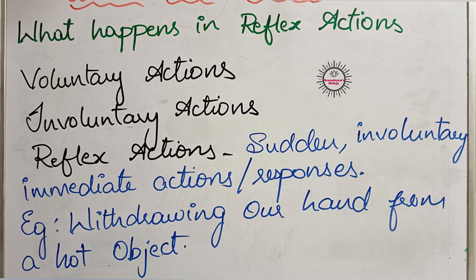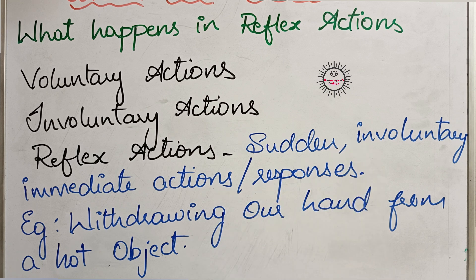All these responses are involuntary and take place within a fraction of seconds, without our knowledge. We are not controlling them. These reflex actions help us to save ourselves from dangers. For example, you are walking in bushes and suddenly you see a snake — you will run away from it without thinking about it. If you think about it for some time, it might get late and you might get bitten by the snake. So these actions need immediate responses, and those types of actions are called reflex actions.